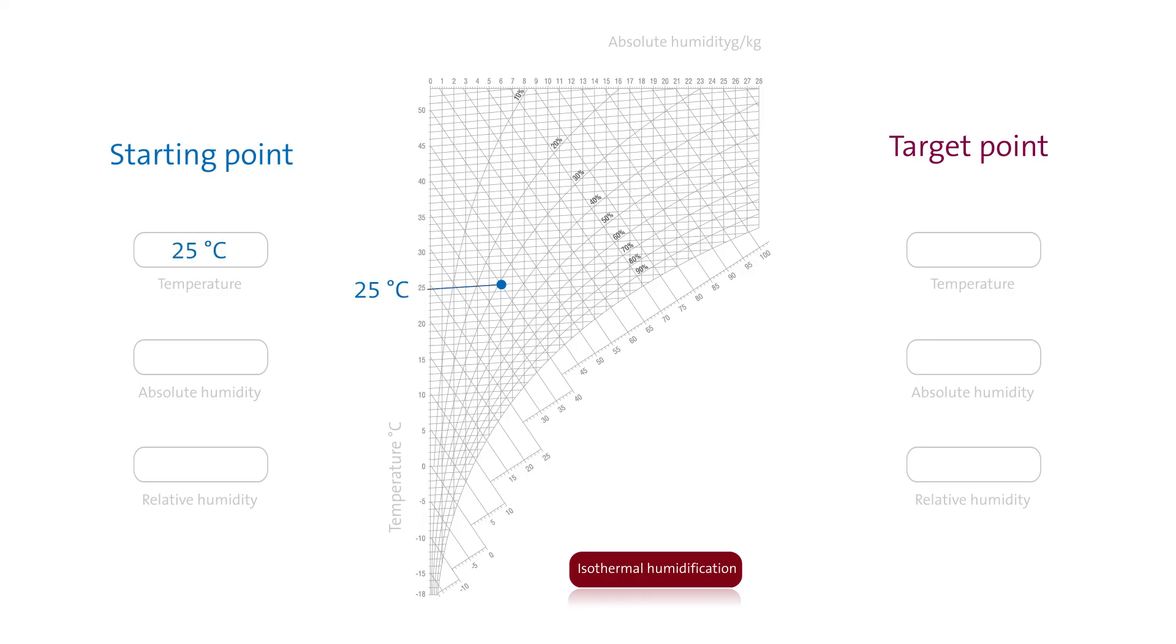Let's start again with a temperature of 25 degrees Celsius, an absolute humidity of 6 grams of water per kilogram of air, and a relative humidity of 31%. We'll now use an isothermal method, that is steam humidification, to add 2 grams of water per kilogram of air.